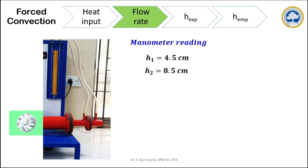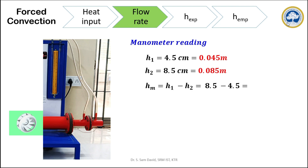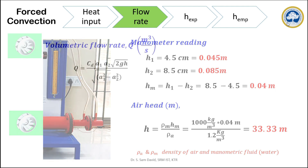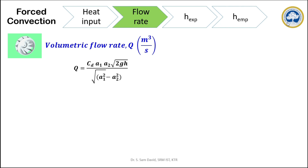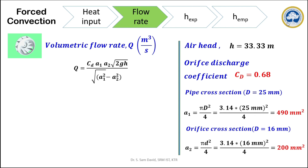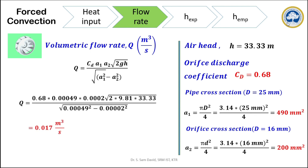In this experiment we got h1 and h2 to be 4.5 and 8.5 centimeters, which we convert to meters to avoid errors. The manometric head is the difference of h1 and h2, and we calculate the pressure head using the corresponding formula. Once the head is calculated, we substitute it into the volumetric flow rate equation for the orifice meter. The orifice discharge coefficient is given as a constant, and the pipe and orifice cross-section diameters are noted. Using these diameters we calculate areas a1 and a2, then compute the volumetric flow rate. After substituting the corresponding values, the flow rate is calculated to be 0.017 m³/s.